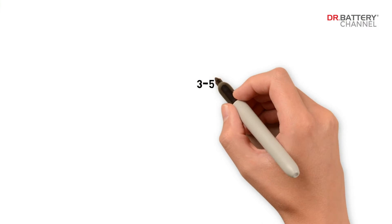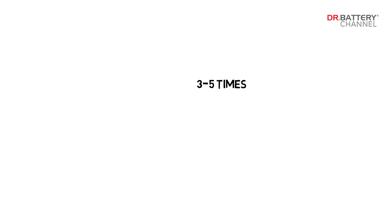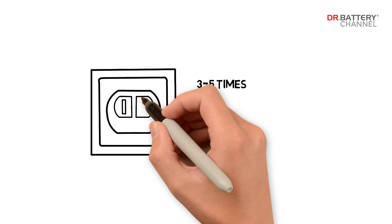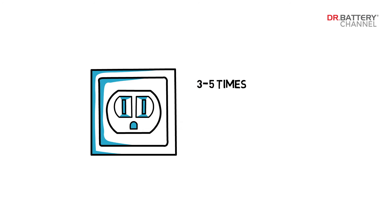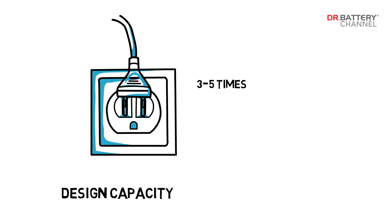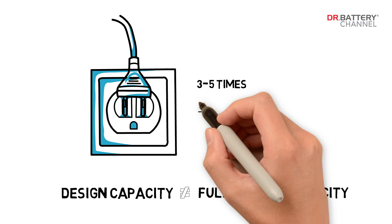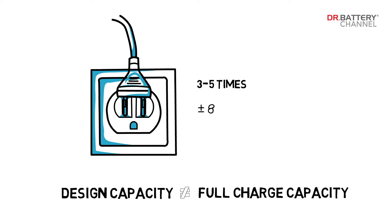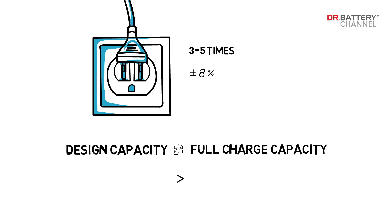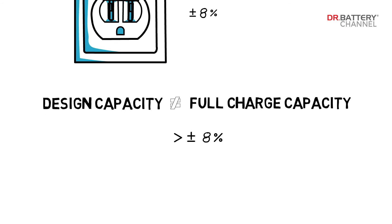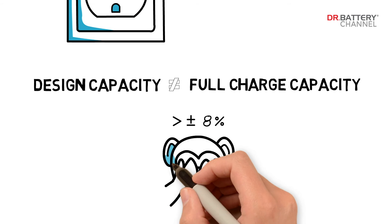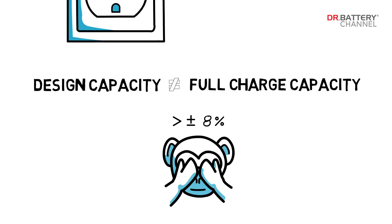In most cases, after 3 to 5 times of this full charge and discharge process, you may notice a difference between the design capacity and full charge capacity. This is normal and acceptable, as long as it is within a reasonable range — generally plus or minus 8%. If the difference is significantly larger than plus or minus 8%, it may indicate some quality issues with the battery.